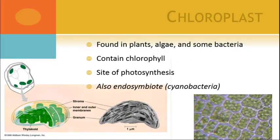Plants — and also algae and some bacteria — have chloroplasts. Chloroplasts contain their own DNA. They also contain chlorophyll, which is responsible for driving photosynthesis — we're not going to talk about photosynthesis in this class, though it is super interesting. Chloroplasts are also endosymbiotes — specifically cyanobacteria — as opposed to the purple bacteria that became mitochondria. And they have that same double membrane, which is so important to the endosymbiotic theory. We'll talk about that in a later lecture.